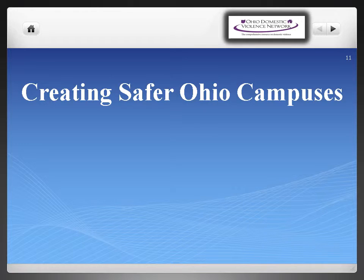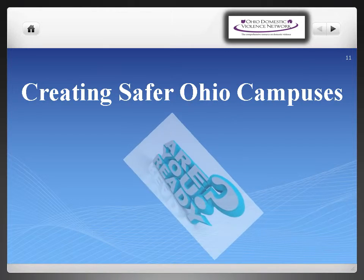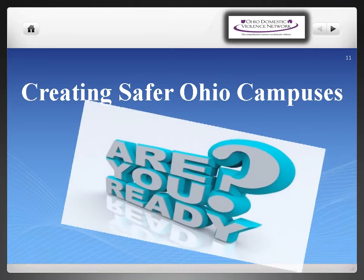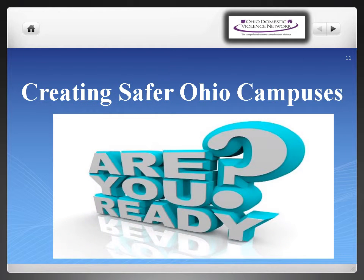And now let's move on to lesson two, where we'll focus on the readiness assessment model, which is an instrument used to gauge your campus's knowledge about the culture that surrounds relationship and sexual violence prevention efforts.